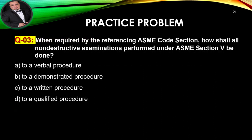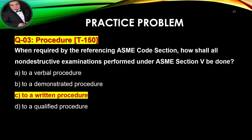Question number three: When required by the referencing ASME code section, how shall all non-destructive examinations performed under ASME Section 5 be done? A. To a verbal procedure. B. To a demonstrated procedure. C. To a written procedure. D. To a qualified procedure. The best answer for question number three is per item T-150 — it is C, a written procedure first, and then a demonstrated procedure.